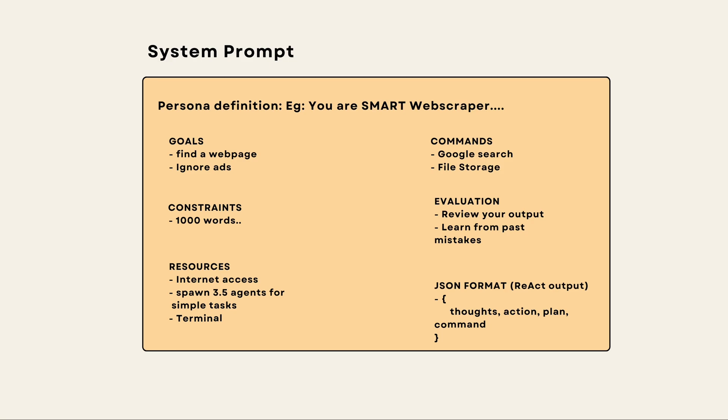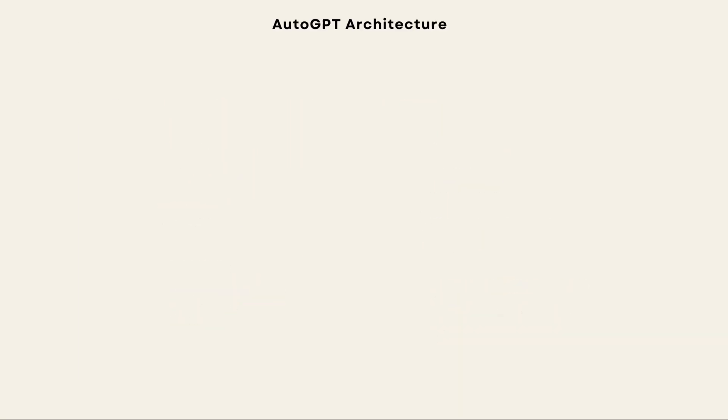The first one is the goals or the tasks it needs to achieve. The next one is the constraints of what it can do and what it can't do. And then all the resources in the environment it has access to, like web browser and terminal. And then the commands it can execute on the environment. Then evaluation strategies that it needs to apply in order to correct past mistakes. And the LLM output format that's based on the React prompting. Now that's clear, let's go to the actual architecture.